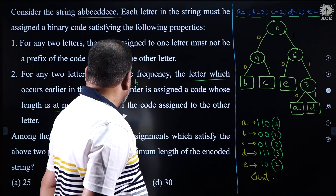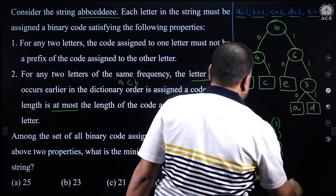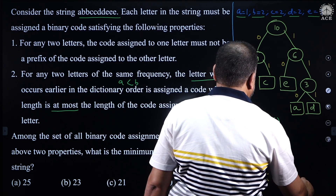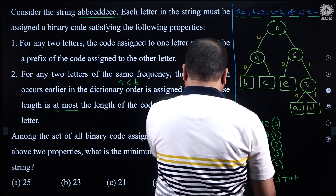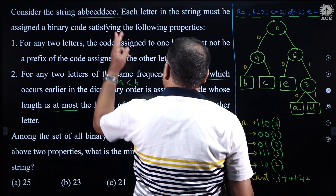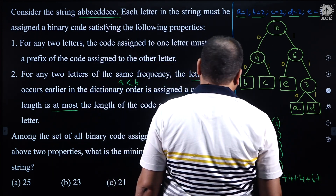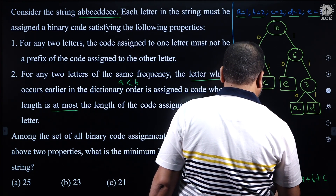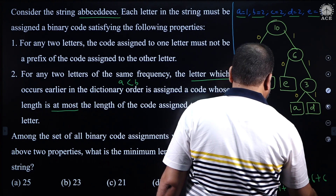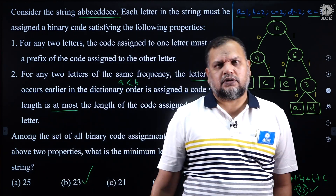Now, what is the minimum length of the encoded string? A occurs 1 time with 3 bits: 3. B occurs 2 times with 2 bits: 2×2=4. C occurs 2 times with 2 bits: 2×2=4. D occurs 2 times with 3 bits: 2×3=6. E occurs 3 times with 2 bits: 3×2=6. Total: 3+4+4+6+6 = 23. The answer is 23.